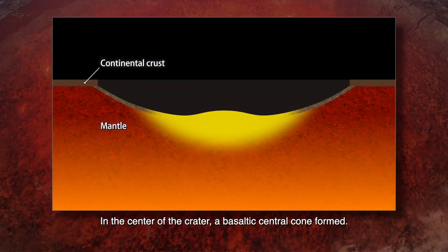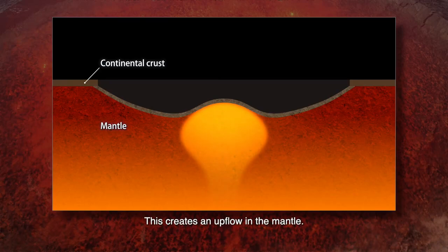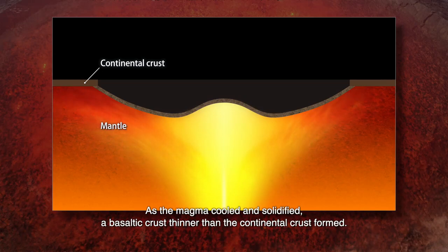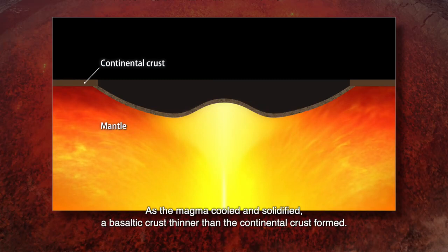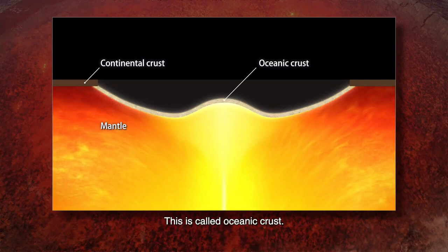In the center of the crater, a basaltic central cone formed. This created an upflow in the mantle. As the magma cooled and solidified, a basaltic crust thinner than the continental crust formed — this is called oceanic crust.